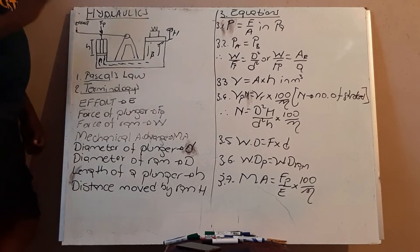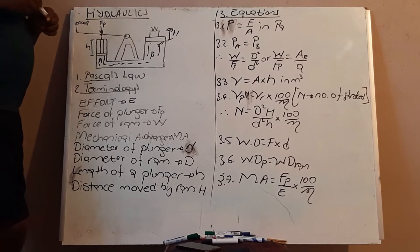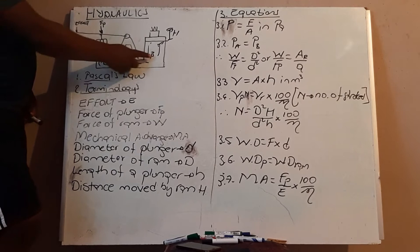The first equation is pressure equals force over area, measured in pascals — Newton per metre squared is pascals, or it can be kilopascals depending on the magnitude of your pressure. Then you apply Pascal's rule: pressure at A equals pressure at B, meaning pressure at the plunger equals pressure at the ram.